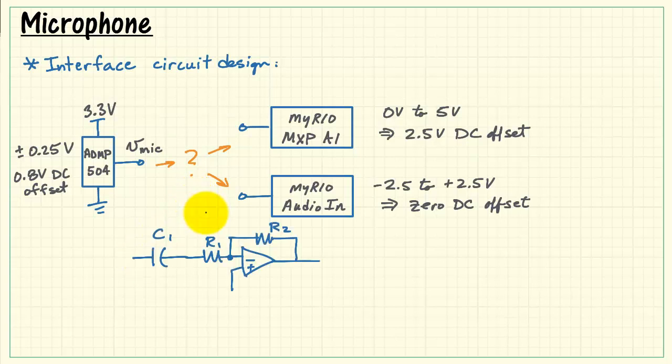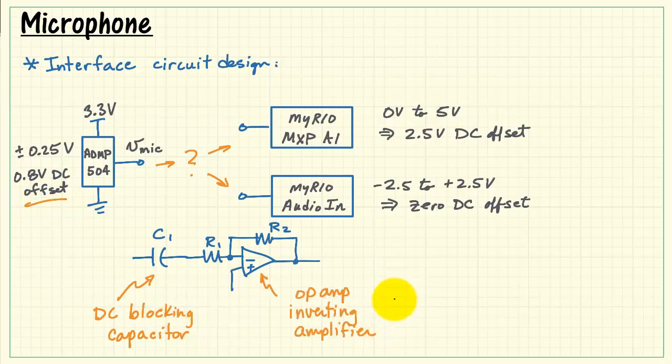Taking into account these facts, I will propose that we use an inverting amplifier with a DC blocking capacitor. The blocking capacitor will take care of removing the 0.8 volt DC offset, and from there we can concentrate on specifying the gain magnitude that we need for the amplifier. We have 0.25 volts going in. We'd like a 2.5 volt range coming out. That suggests that we need a gain of 10, and we can accomplish that by choosing R2 to be 10 times that of R1.